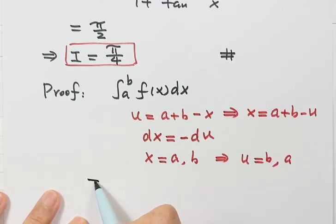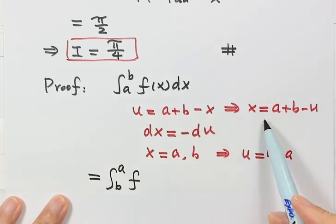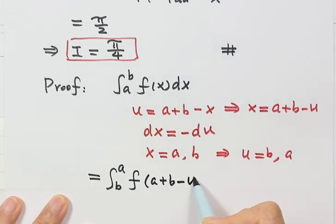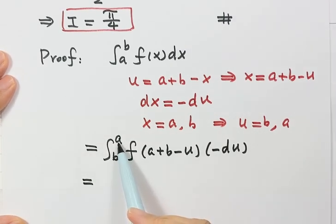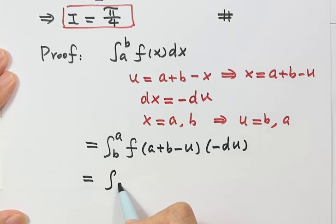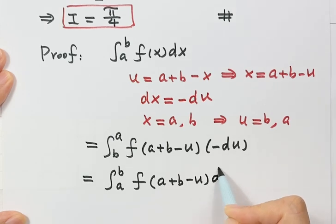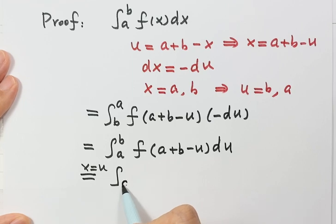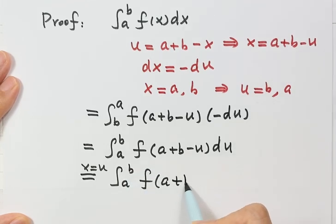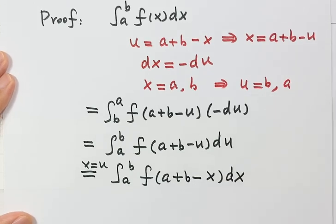Substituting, we get the integral from b to a of f(a + b − u) times (−du). Swapping the limits eliminates the negative sign, giving the integral from a to b of f(a + b − u) du. Replacing u with x, we get the integral from a to b of f(a + b − x) dx, which proves the King Property.